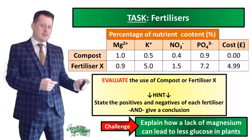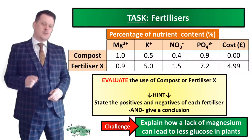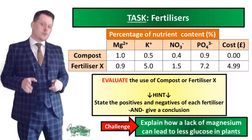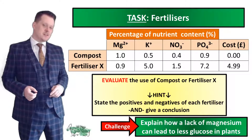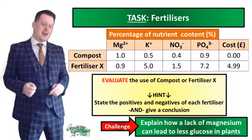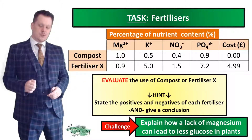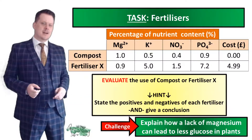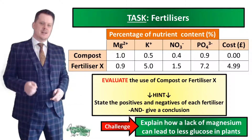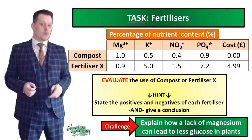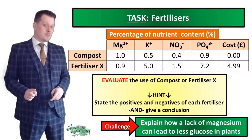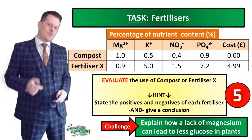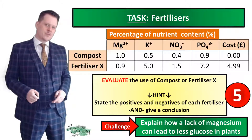For our next task I'd like you to evaluate the use of compost versus fertilizer X. Because this is an evaluate question you need to give all the good and bad things about compost, all the good and bad things about fertilizer X, and then give a conclusion. And if you really want a challenge, explain how a lack of magnesium can lead to less glucose in plants. Five seconds on the clock — pause if you need more time.